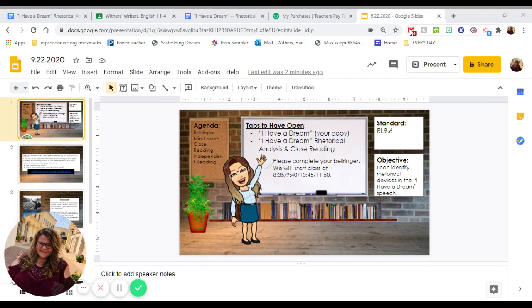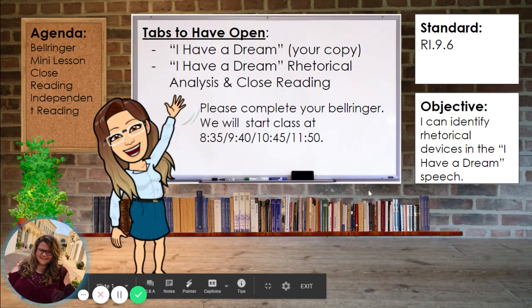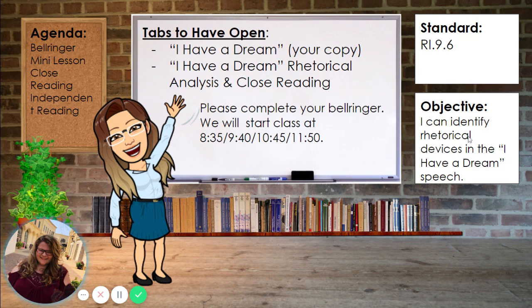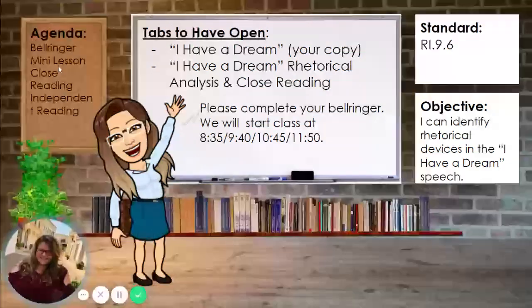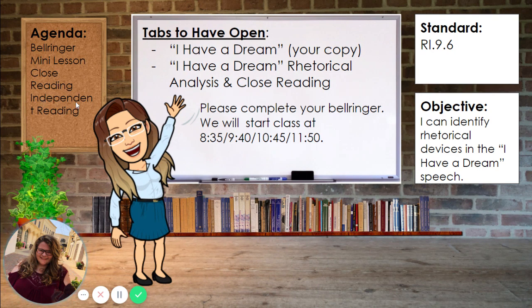We are going to take a deep dive into unit two today. We'll be looking at Dr. King's 'I Have a Dream' speech through the rhetorical lens. We've done a bell ringer, we're going to do a mini lesson for close reading, and then there will be some independent reading time. Our objective is RI 9.6: I can identify rhetorical devices in the 'I Have a Dream' speech.